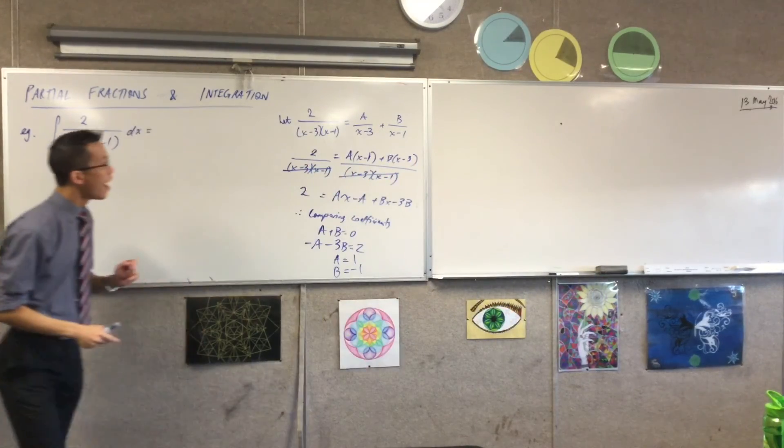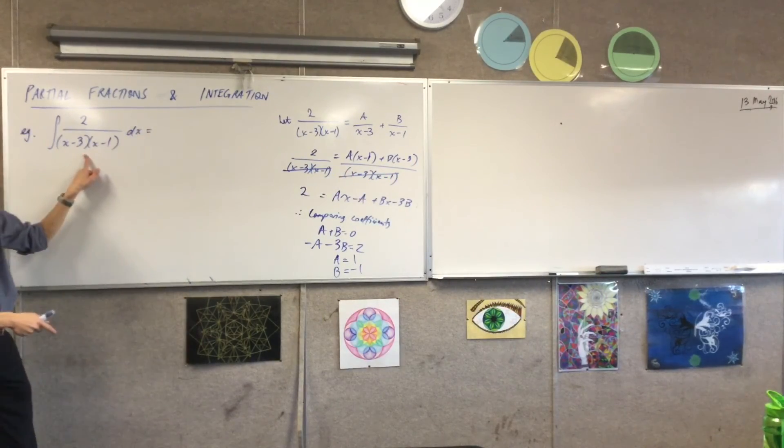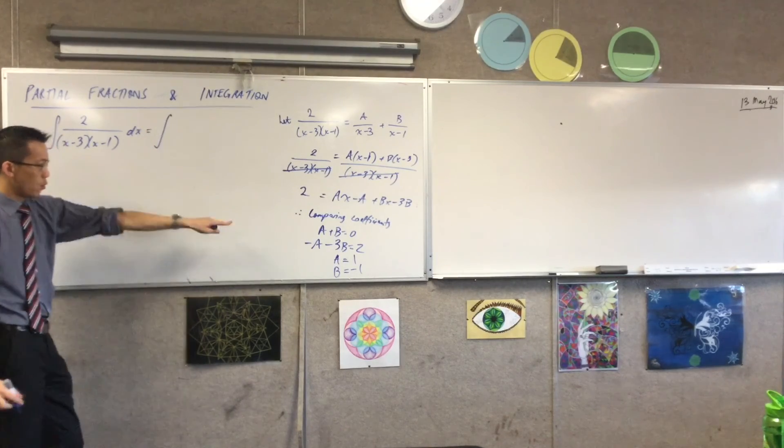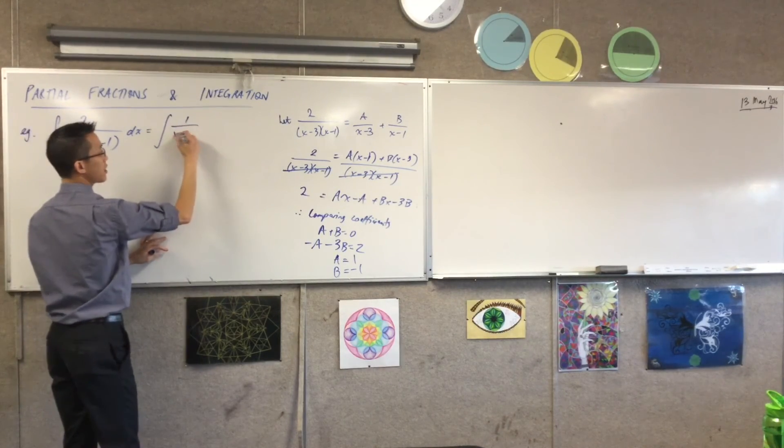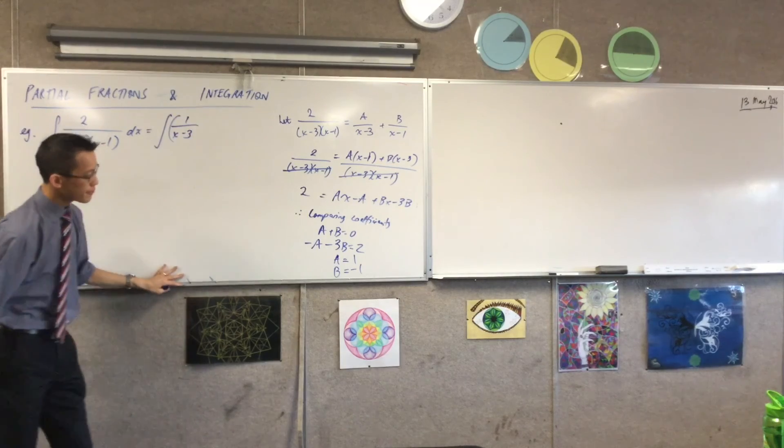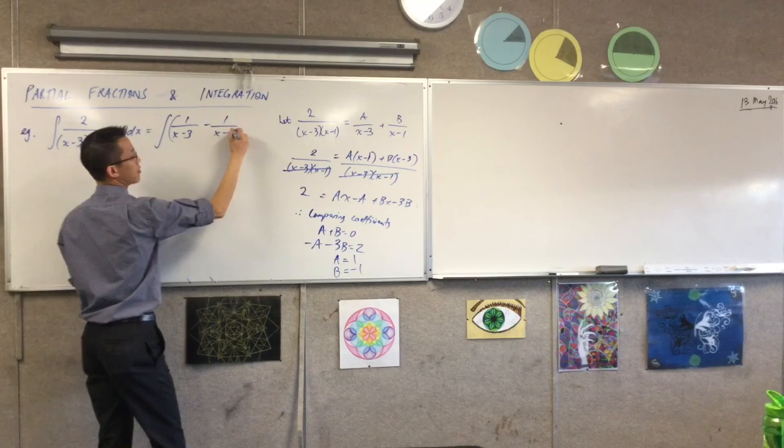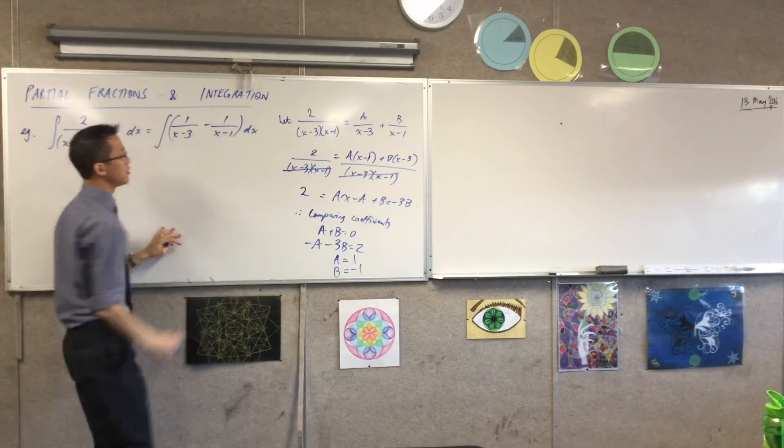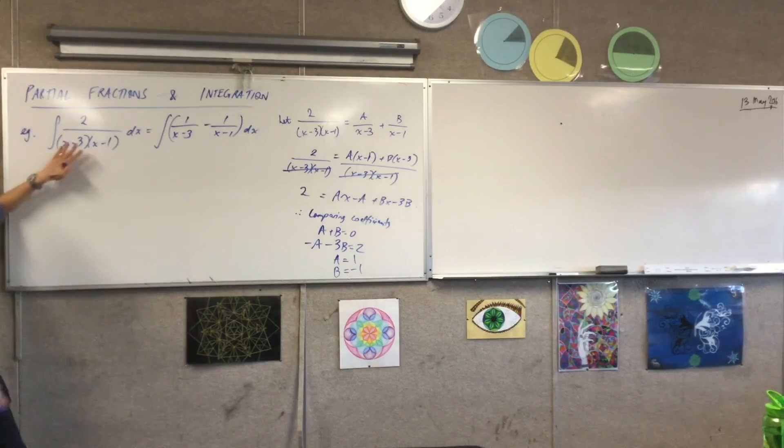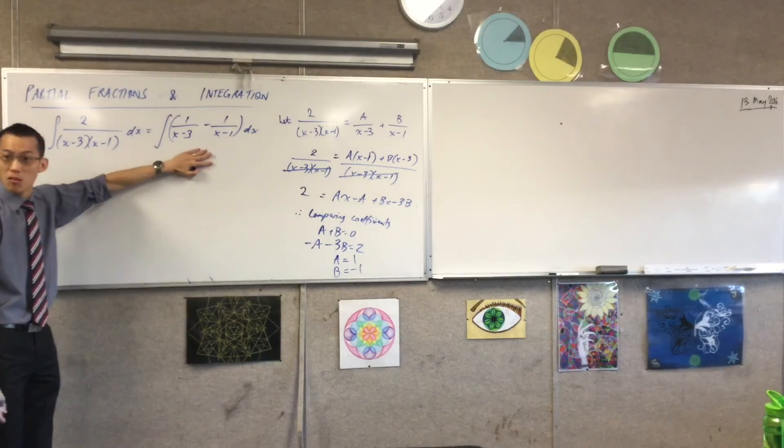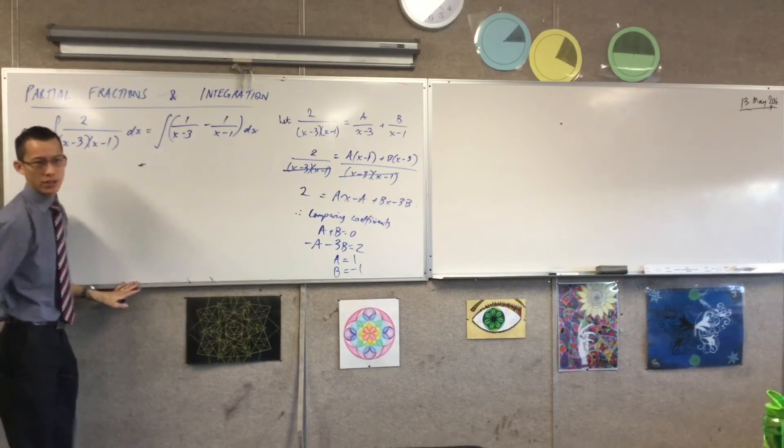Now that I've done that, I can say instead of this fraction, I can write this as the integral of what I have, 1 over x minus 3, and then I've got minus the other fraction, minus 1 over x minus 1, dx. And so you can see, we've taken something which is kind of icky, and using these polynomial techniques, this is trivial.